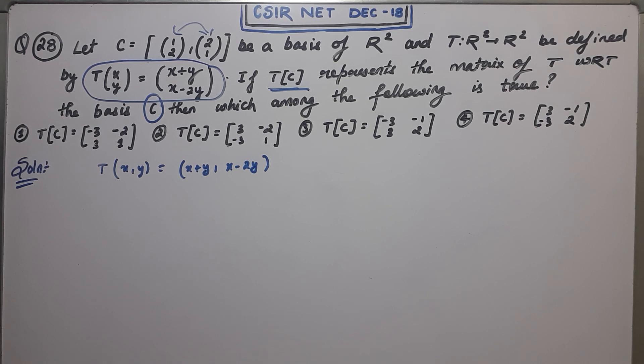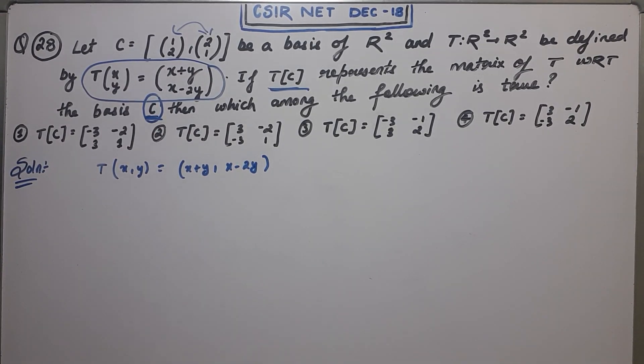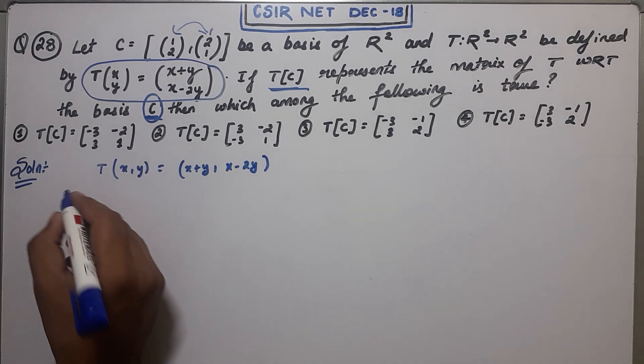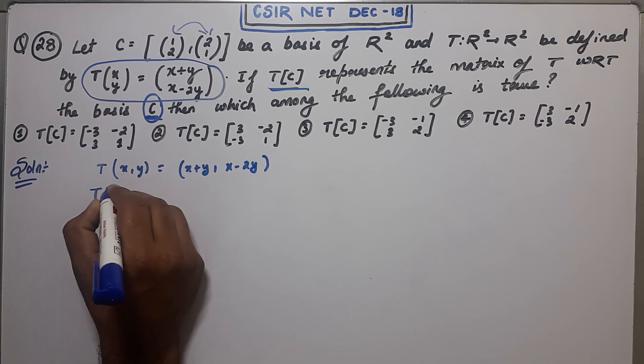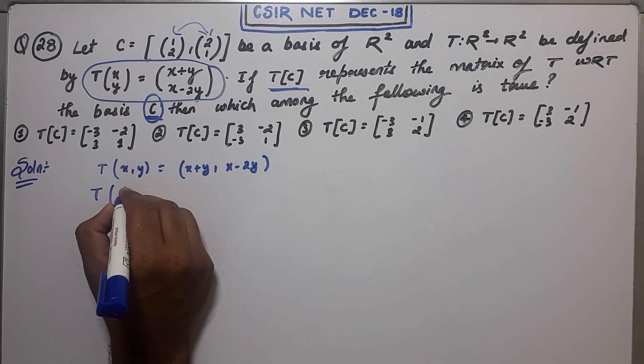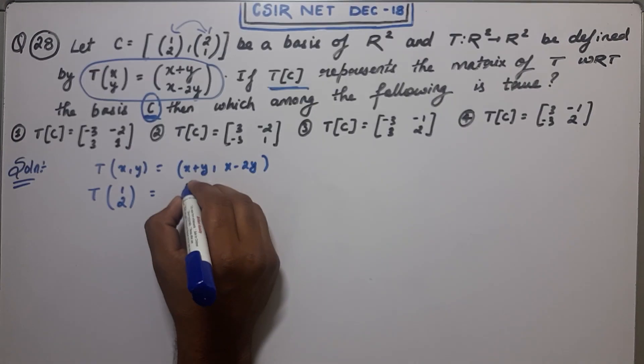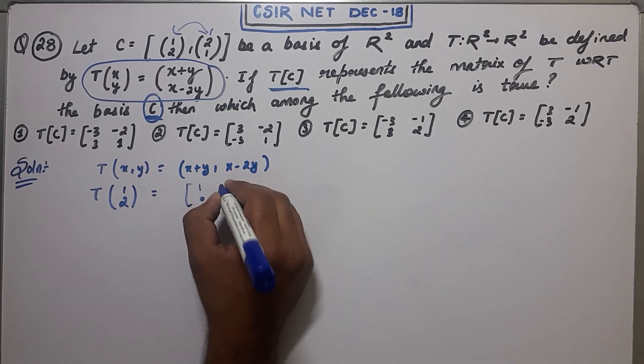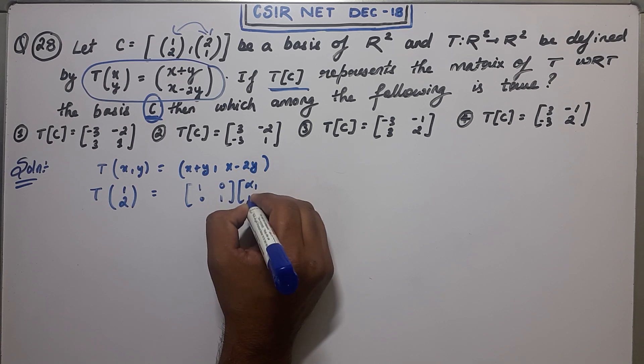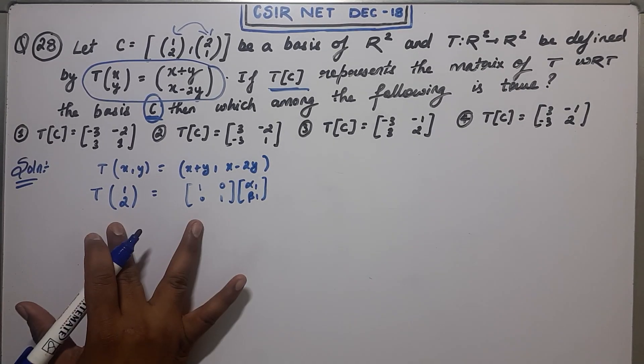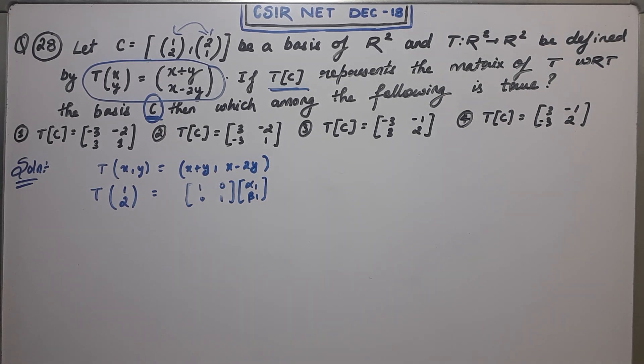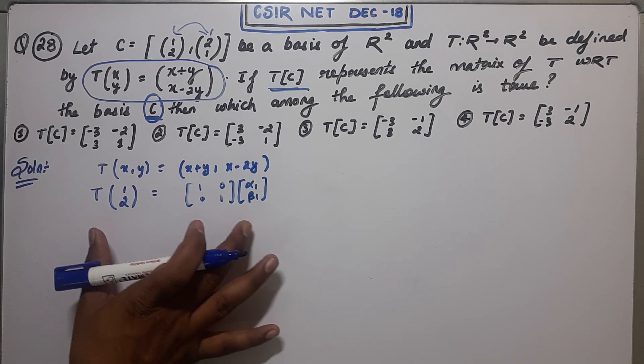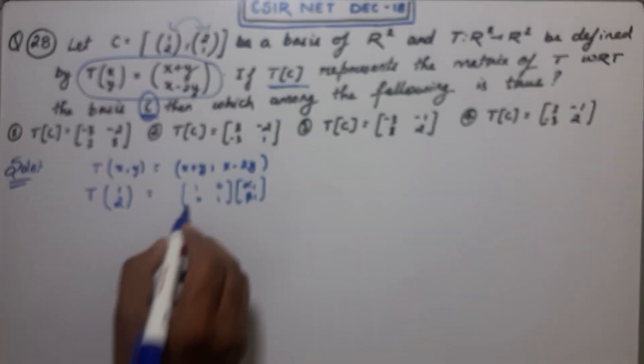An important thing to note here is that you have to find the matrix of T with respect to the basis C, not with respect to the usual basis. What I am saying is that if you try to find the matrix, what you firstly do is put T of (1,0). You find the image of the basis element and then you solve this system. By solving this system, you are getting alpha 1 and alpha 2. But that matrix which you are getting by this formula will be the matrix with respect to the usual basis.